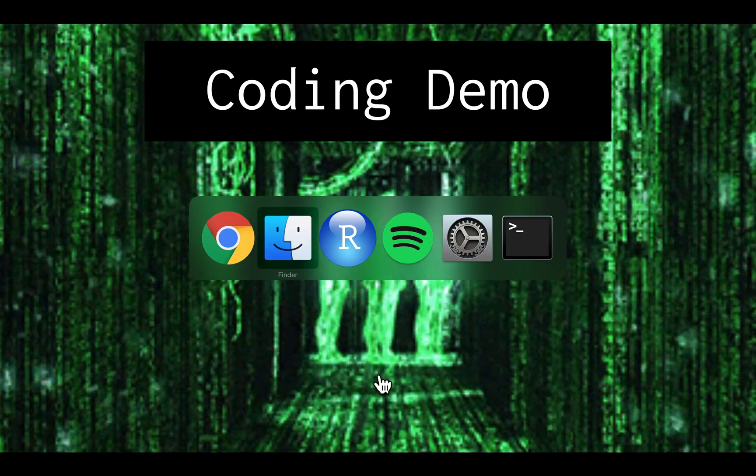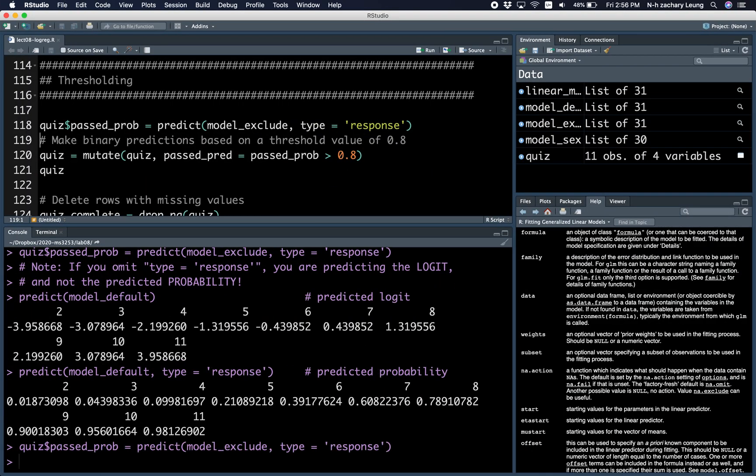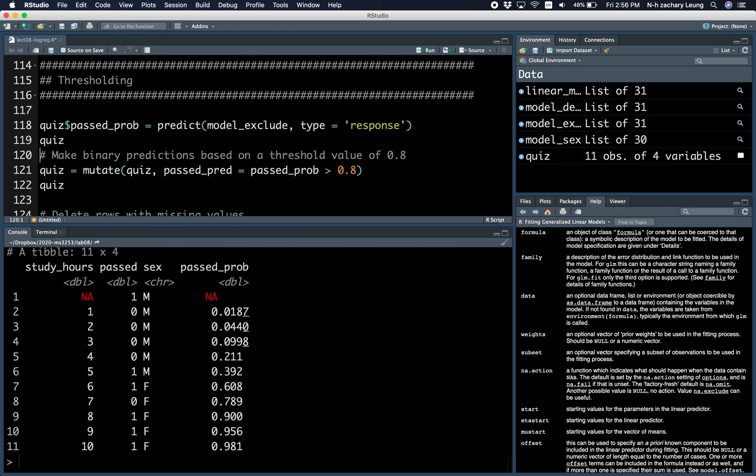Let's do a quick coding demo. Here are the predicted probabilities. If we choose to make predictions based on a threshold value of 0.8, let's say, because you don't want to tell someone that he probably will pass the quiz if he actually has a 30% failing rate, only a 70% of passing.